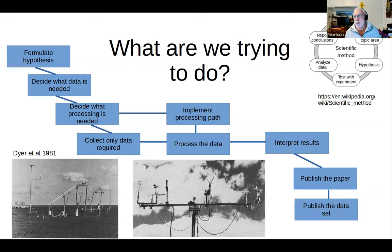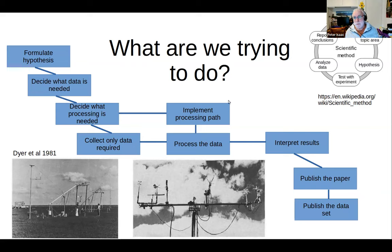You only go out and collect the data you need to answer your hypothesis. You've also got to implement a processing path — very important, because we're going to have huge quantities of data and you'll need a method to process it. Then process the data, do your results interpretation, publish the paper, and these days, just as importantly, publish the data set. There's a scientific method diagram from Wikipedia — form a hypothesis, follow the steps — that's basically what I've described.